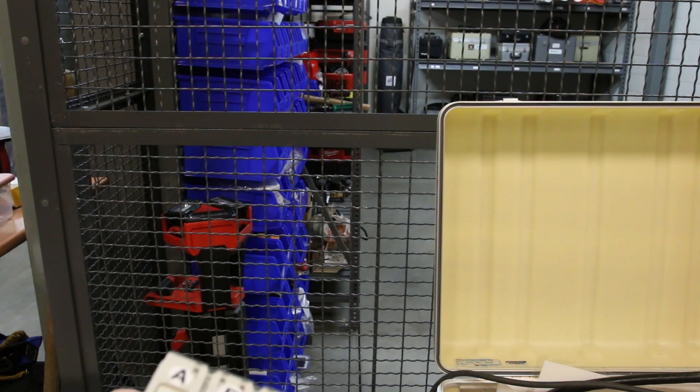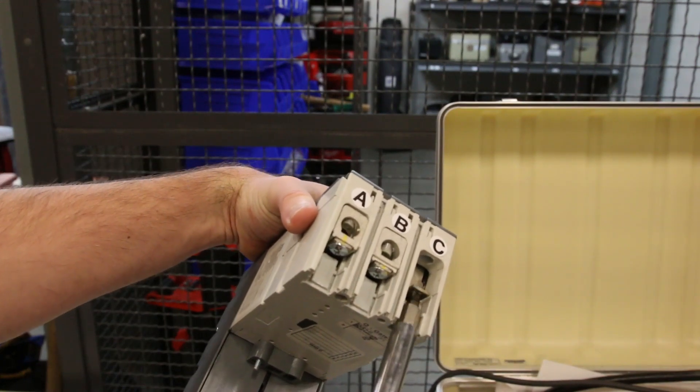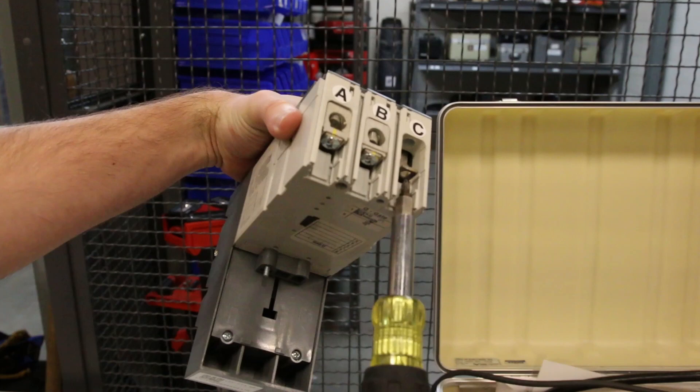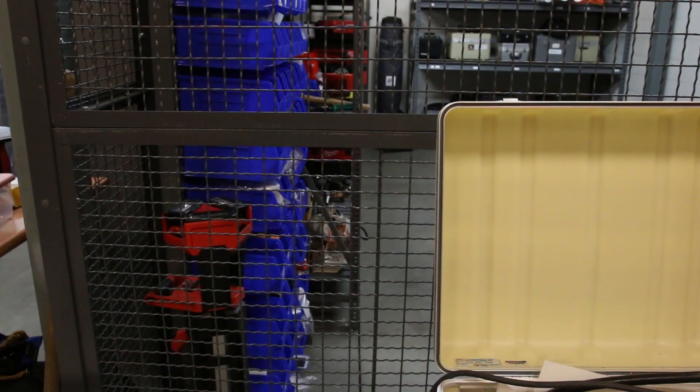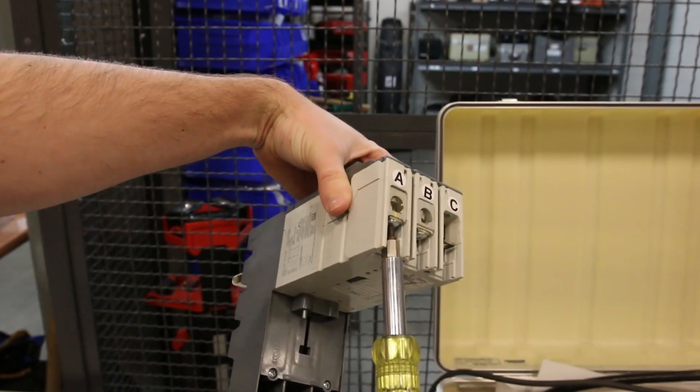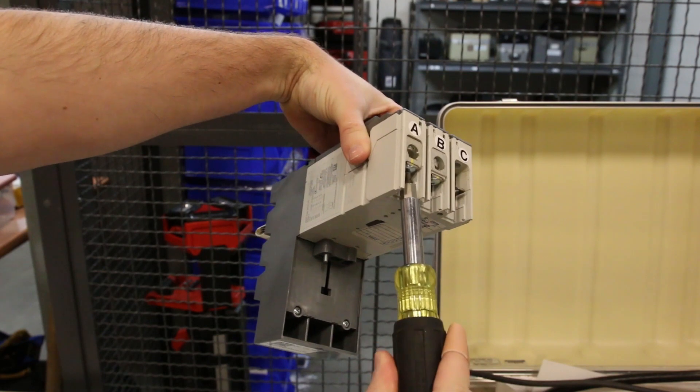So this one, obviously this is the one with the burnt lug on it. We left that at the site. So we're going to show you another one. When I took off the C phase lug, I was able to give it an extra like quarter turn, just barely a quarter turn.